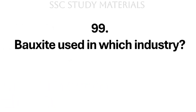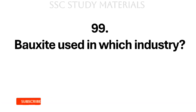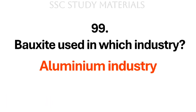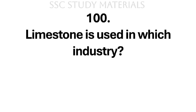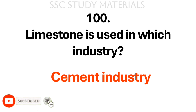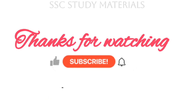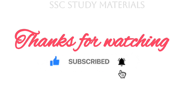Question No. 99: Bauxite is used in which industry? Answer: Aluminium industry. Question No. 100: Limestone is used in which industry? Answer: Cement industry. With this we came to an end to our video. Thanks for watching. Do like and subscribe to my channel for more videos.